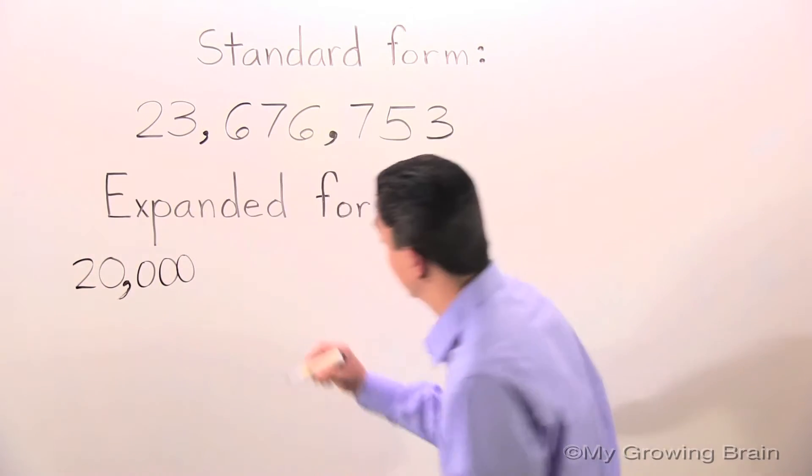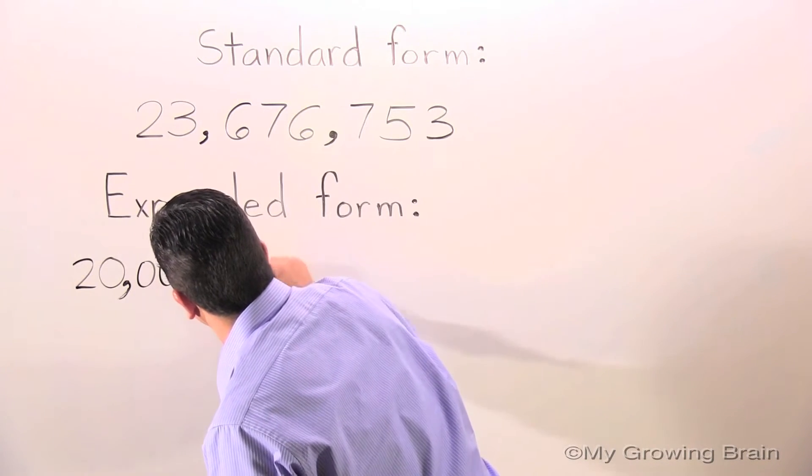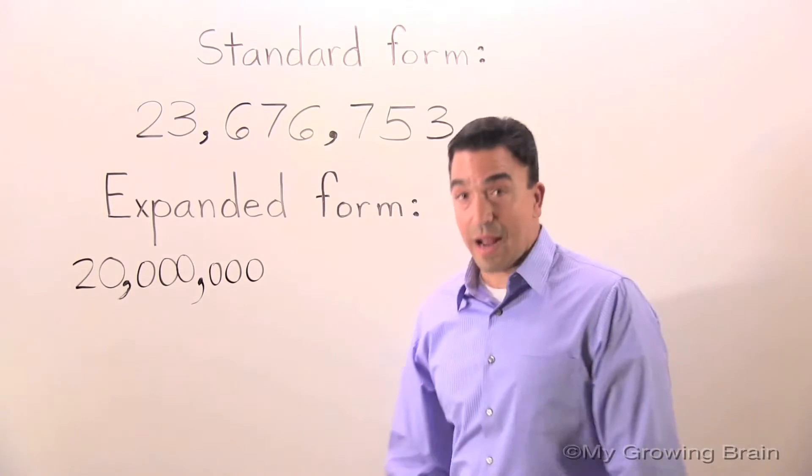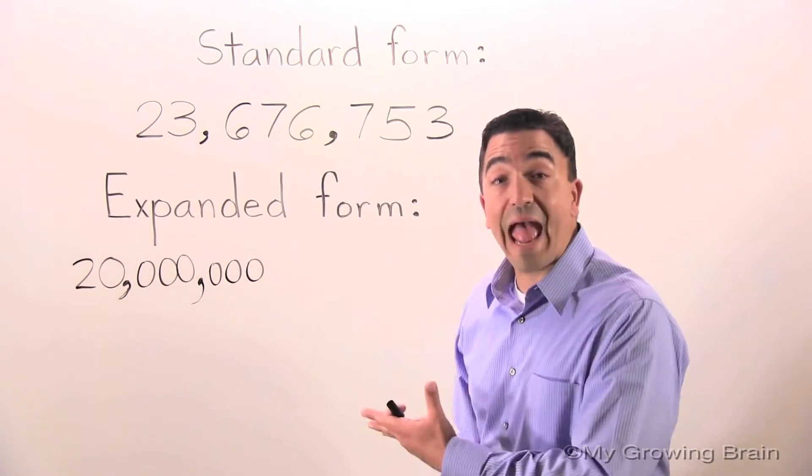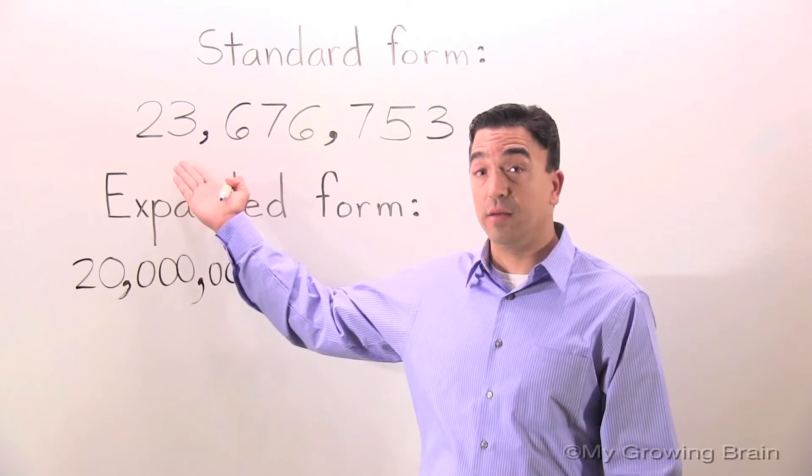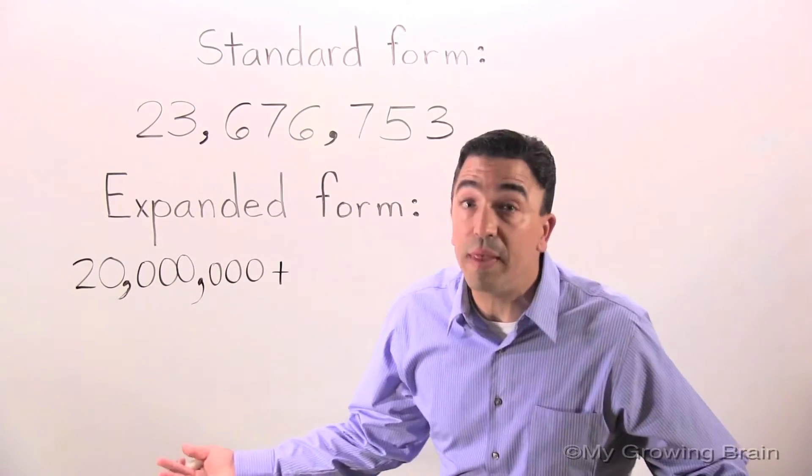Whoo! A lot of digits. All right! We're going to add 20 million to the value of 3 in the millions place, which would be 3 million.